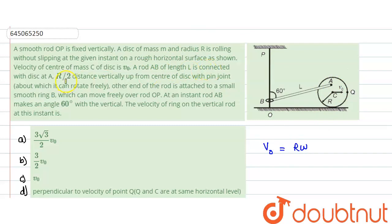Now a rod AB of length l is connected to the disk at R/2 distance vertically up from the center of the disk with the joint. The other end of the rod is attached to a small smooth ring B.